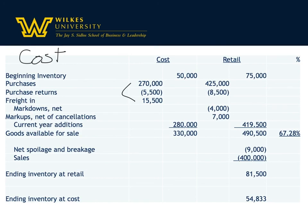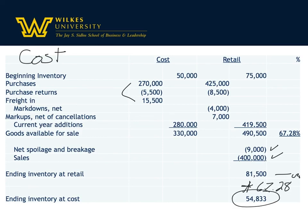The cost method says markdowns are a part of life just as much as markups — let's stop including one and not the other. We have retail goods available of $490,500. Subtract the breakage and the sales, and what's left must be ending inventory at retail of $81,500. Multiply that by 67.28%, and we end up with ending inventory at cost of $54,833.